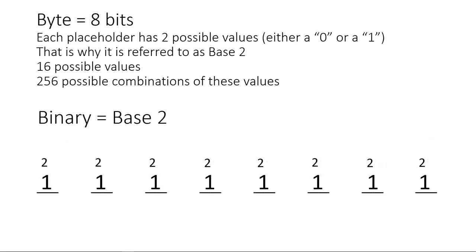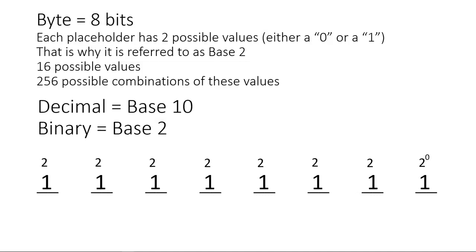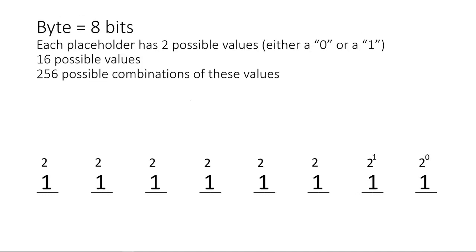But what about binary? That's a base two system. Because we can only have two possible values per placeholder. So in being base two, we can put two above each number and then add the power of our exponent to it. Two to the zero, two to the one, two to the two, two to the three, two to the four, two to the five, two to the six, two to the seven.